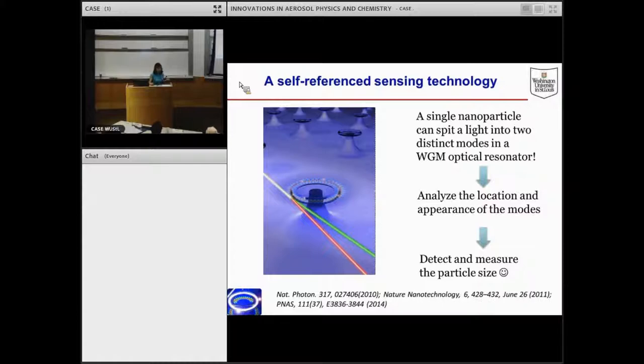So in summary, here is how the technology works. You have a whispering gallery structure. If there is a nanoscatterer sitting on the rim, then you'll find that a single mode will split into two. By analyzing the location and appearance of modes in the transmission spectrum, you will be able to detect and do quantitative measurements of the particle size.